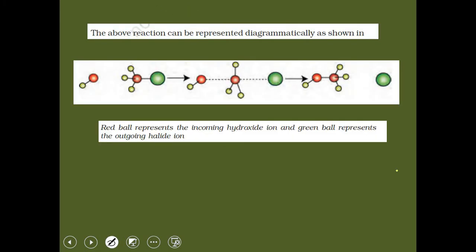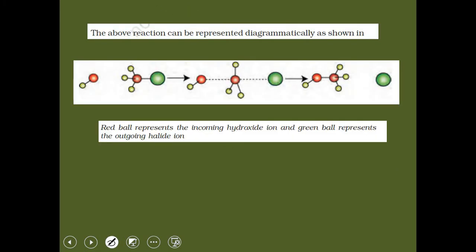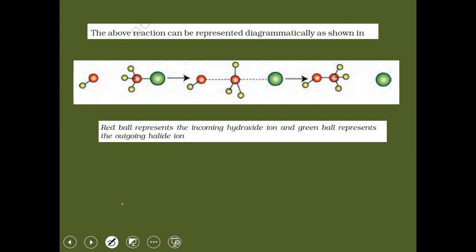The same thing can be represented in the form of a diagram. The red ball represents the incoming hydroxide ion attacking the molecule of haloalkane, this is the transition state, and the green ball represents the outgoing halide ion.